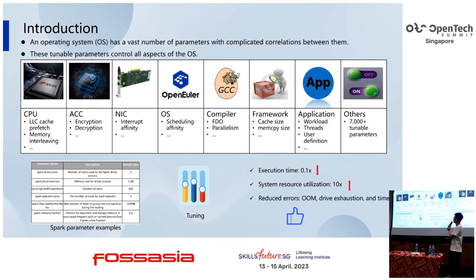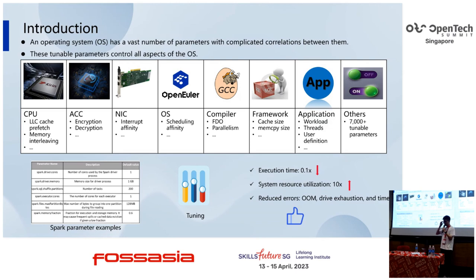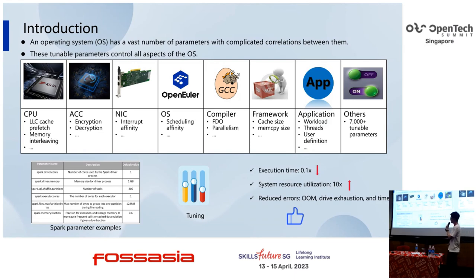If we tune these parameters, there are several advantages. For example, the execution time of Spark can drop 10 times, the system resource utilization could go up 10 times, and we can also reduce errors such as OOM and timeout.